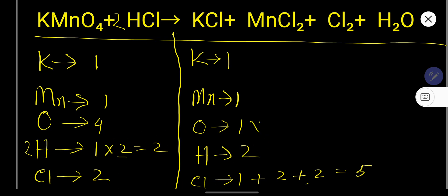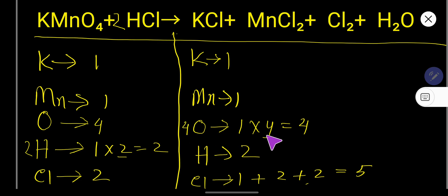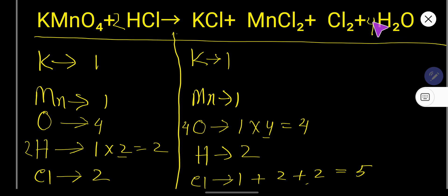Now hydrogen is balanced but oxygen is not. On the left we have 4 oxygen from KMnO₄ and on the right only 2. To balance oxygen, multiply the water coefficient by 4 — place 4 before H₂O. With coefficient 4 and subscript 2, we get 4 times 2 equals 8 hydrogen on the right side. So you need 8 hydrogen on the left.